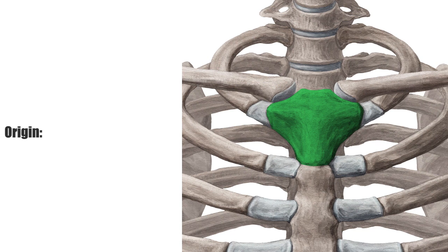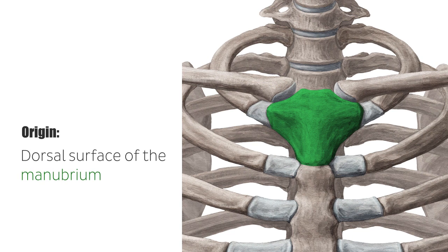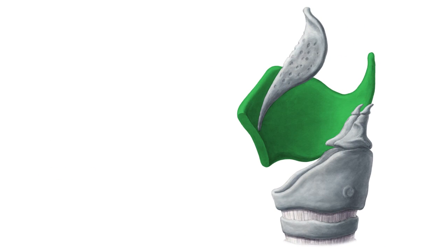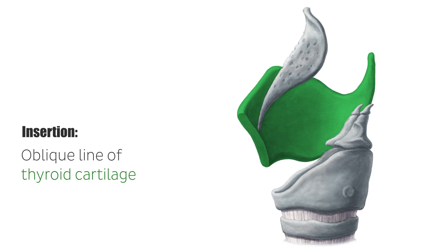The sternothyroid muscle originates from the dorsal surface of the manubrium. It has its insertion on the oblique line of thyroid cartilage. That is why the sternothyroid is the only infrahyoid muscle that does not directly attach to the hyoid bone. The sternothyroid lies in close relation to the capsule of the thyroid gland.